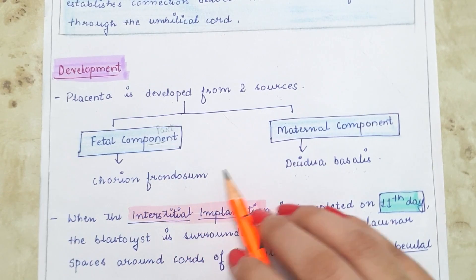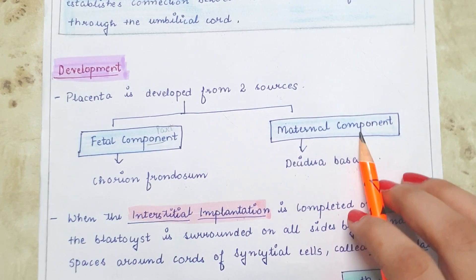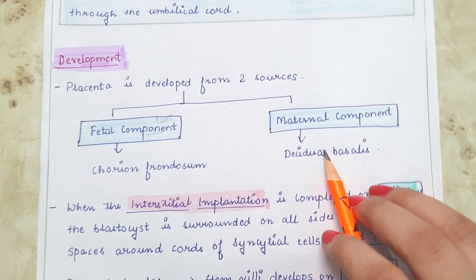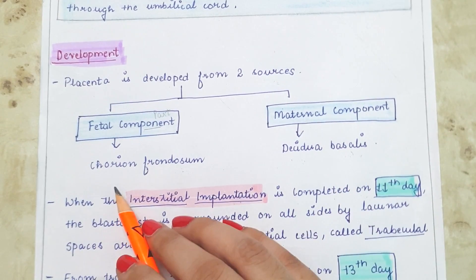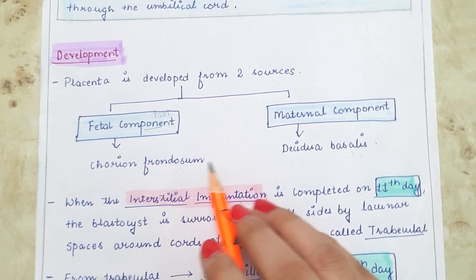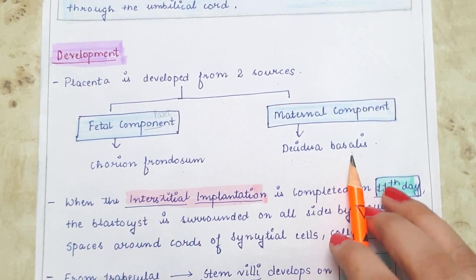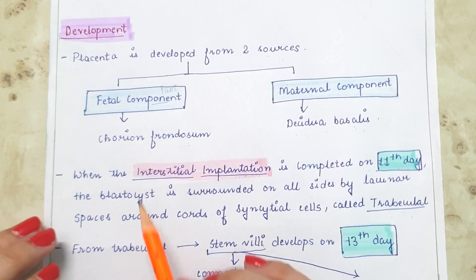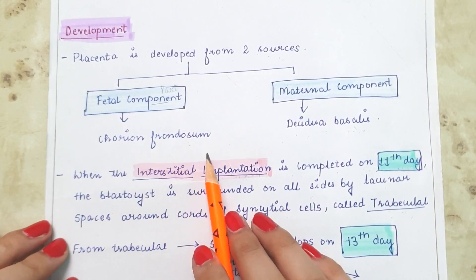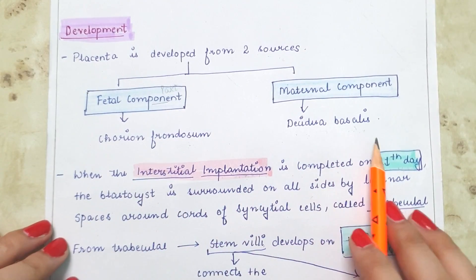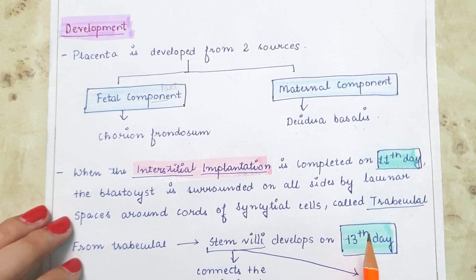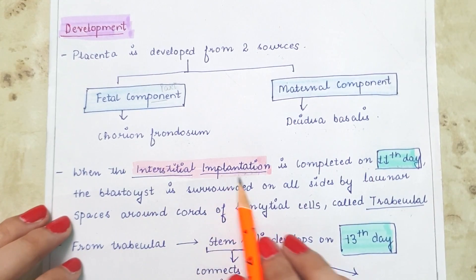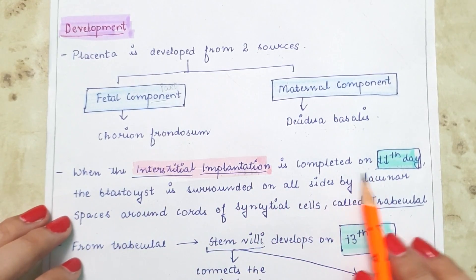The fetal component involved in placental development is the chorion frondosum, and the maternal component is the decidua basalis. I will discuss what chorion frondosum and decidua basalis are, but first I will discuss the process of placental development from the beginning.